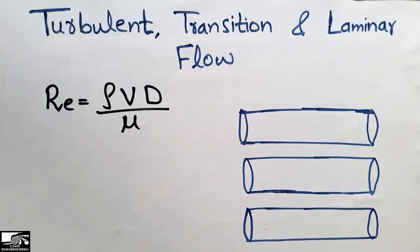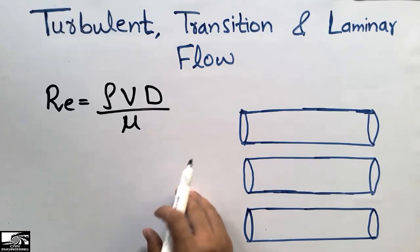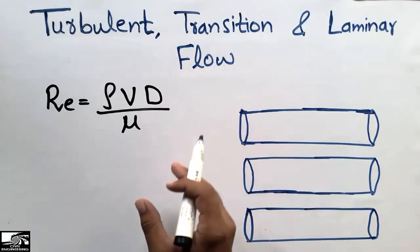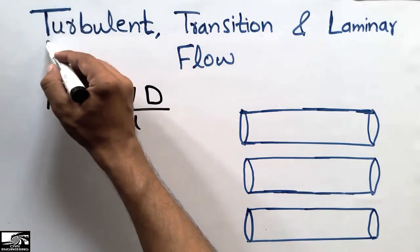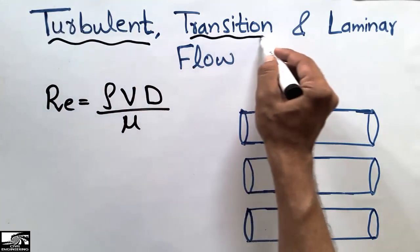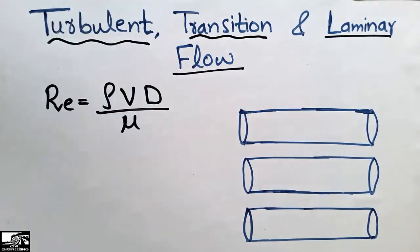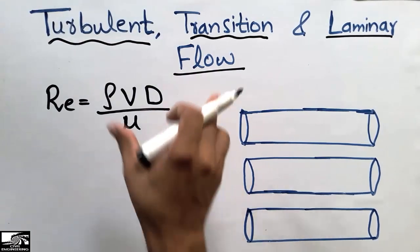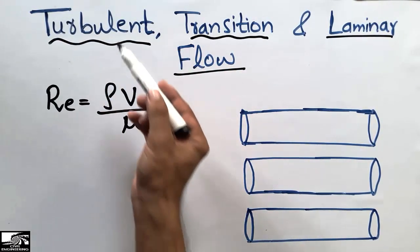Hello guys, welcome back to the C1 Engineering YouTube channel. Please subscribe to our channel for daily C1 Engineering videos. Today our lecture is about fluid dynamics, and in this lecture I will show you the difference between turbulent, transition, and laminar flow. There are three different types of flow, and they have different names.